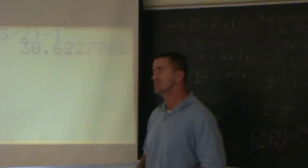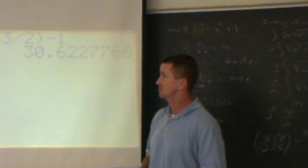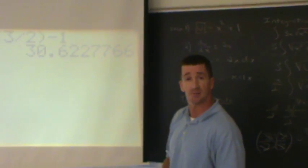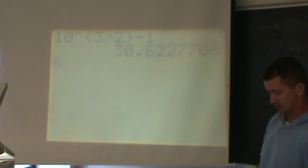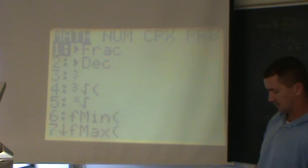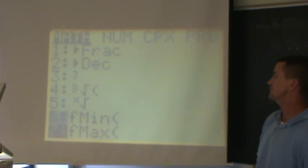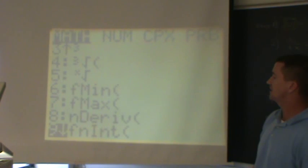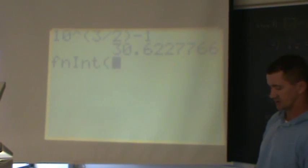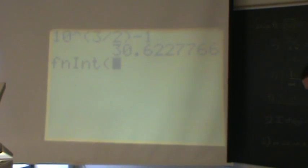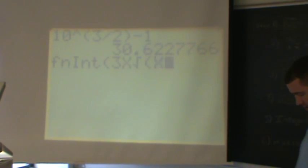One last thing, everyone. I want to show you another way to check this with the calculator. This is in the math menu. So I'm now going to go to the math button. And I'm going to go down to number 9. Function Integrate, fnInt. The first thing I have to do is type in the original expression, that 3x square root x squared plus 1. Close the parentheses.